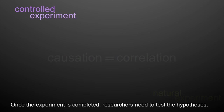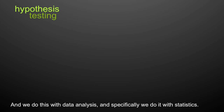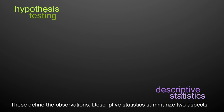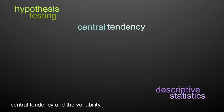Once the experiment is completed, researchers need to test the hypotheses, and we do this with data analysis — specifically, with statistics. One of the first statistics we look at are known as descriptive statistics, which define the observations. Descriptive statistics summarize two aspects regarding the distribution of the data: the central tendency and the variability.